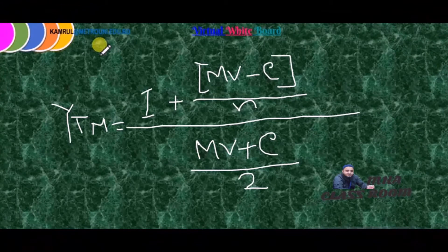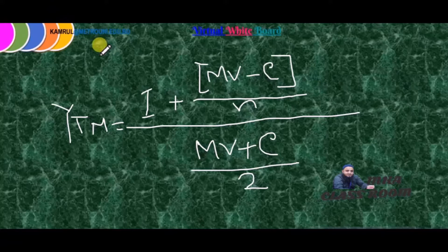Now we will see the formula of YTM. Yield to maturity equals: I (annual interest or annual coupon payment of the bond) plus MB (maturity value of the bond) minus C (current price of the bond), divided by N (number of years to maturity); all divided by MB plus C divided by 2.